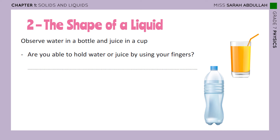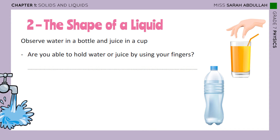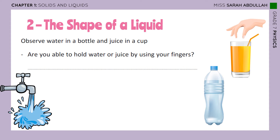Observe water in a water bottle and juice in a cup — we have orange juice here. Are you able to hold water or juice using your fingers? You're not going to know unless you actually experiment. So go to the sink right now, open the tap, and try to hold the water with your fingers. Pause this video, go try it, and come back. Were you able to hold the water with just your thumb and index finger? No, you can't. Unlike solids, liquids cannot be held with fingers.